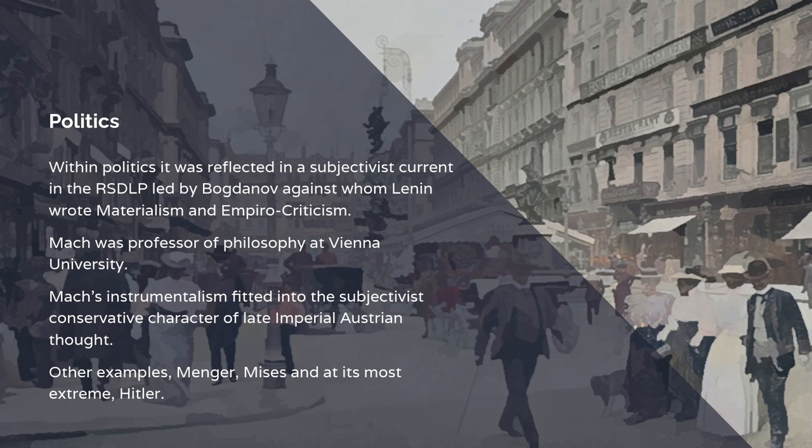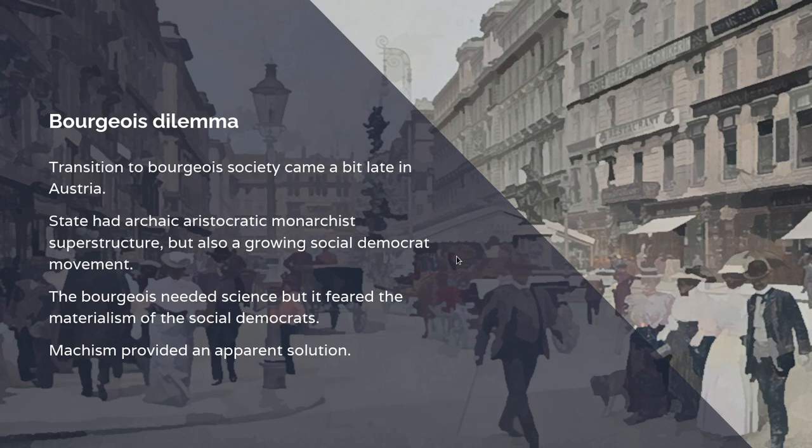Obviously, other examples of this are Menger, Mises and at its most extreme, Hitler. The transition to bourgeois society came rather late by European standards in Austria. It was one of the great powers under the pre-bourgeois system, but as the Industrial Revolution developed, it lagged behind. The Austrian state had an archaic aristocratic monarchist superstructure, supported by the Catholic religion, but also had a growing social democrat movement within the big cities.